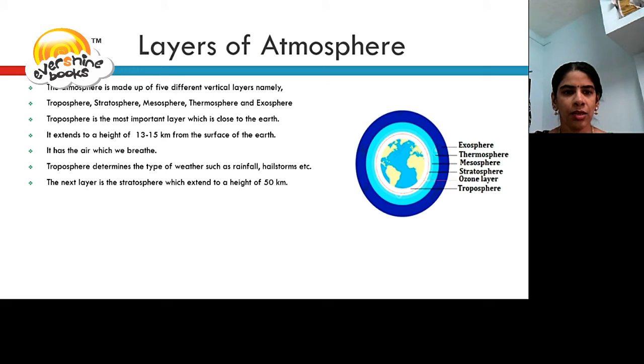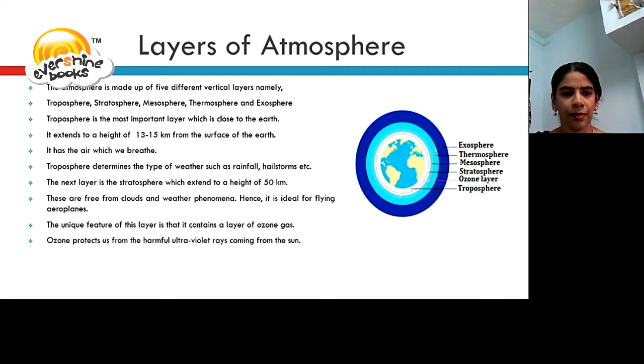The next layer to the troposphere is the stratosphere which extends to a height of 50 km. These are free from clouds and weather phenomena. Hence, it is ideal for flying aeroplanes. The unique feature of this layer is that it contains a layer of ozone gas. Ozone protects us from the harmful UV rays that is ultraviolet rays coming from the sun.